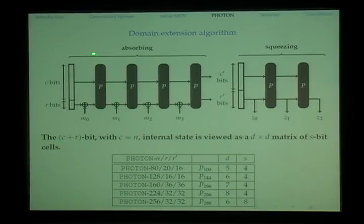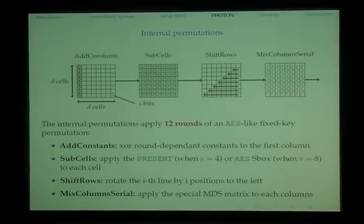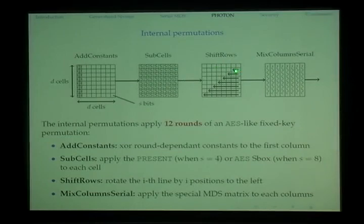We only need to specify the permutation. The permutation consists of 12 rounds, each round is AES-like with four operations: add a round-independent constant and a round-dependent constant into the first column, apply the S-box to every cell, shift row i to the left by i positions, and apply the MixColumn step using our special MDS matrix to each column.